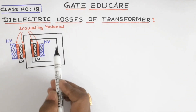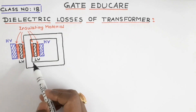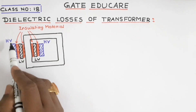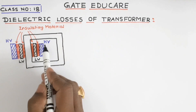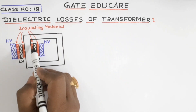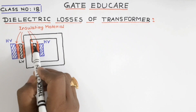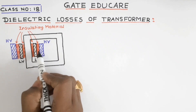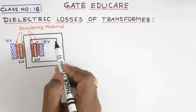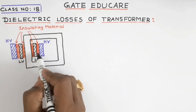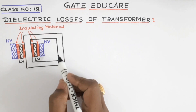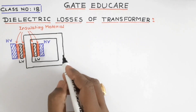A transformer low voltage winding is shown by black color and high voltage winding is shown by blue color. There is an insulating material between the core and the low voltage winding, and between the low voltage winding and the high voltage winding. The losses in these insulating materials or transformer oil is called the dielectric loss of the transformer.